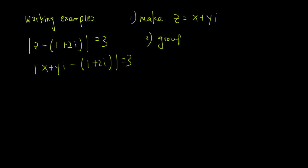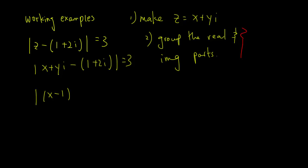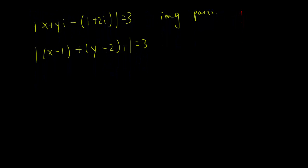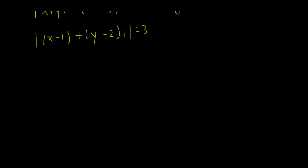The second step is to group the real and imaginary parts — this is also very important for any kind of complex number question. So that gives us x minus 1 plus y minus 2i equals 3. Now if we take the modulus, that would be x minus 1 squared plus y minus 2 squared equals 3.